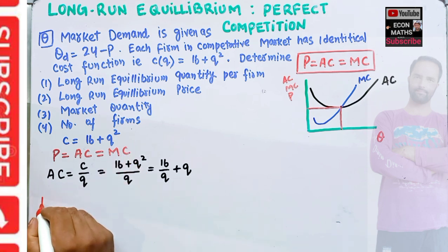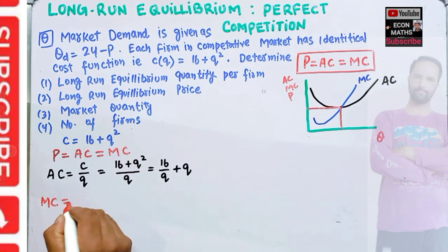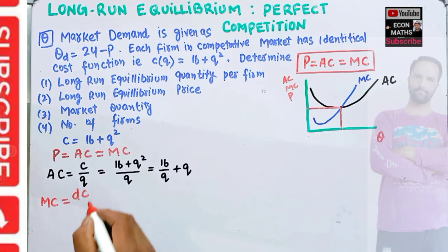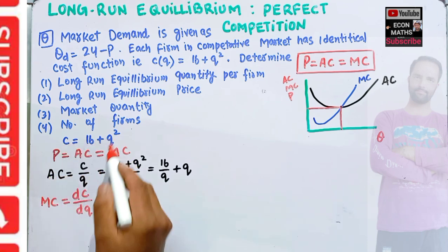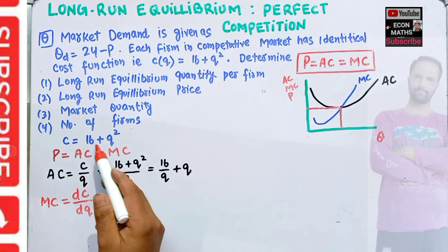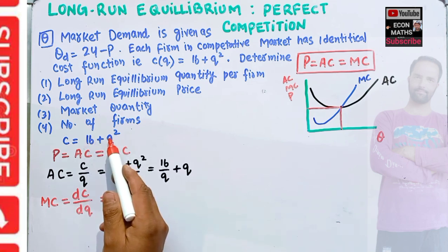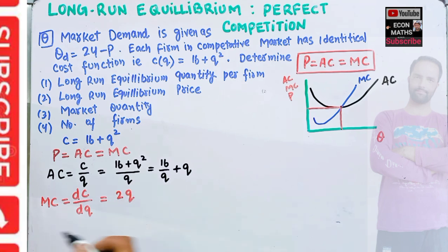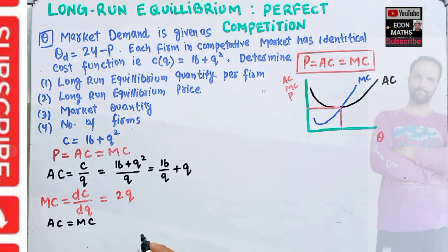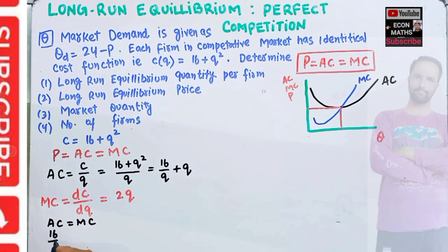We also need to find marginal cost, which is the derivative of the cost function with respect to output. Taking the derivative of C(Q) = 16 + Q² with respect to Q: the derivative of the constant is zero and the derivative of Q² is 2Q, so MC = 2Q. Now we equate average cost with marginal cost: 16/Q + Q = 2Q.